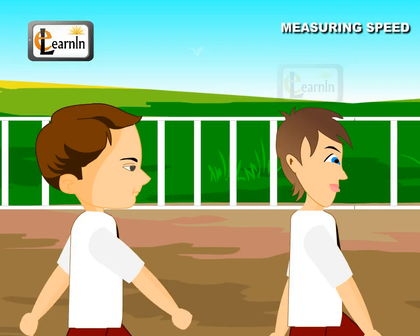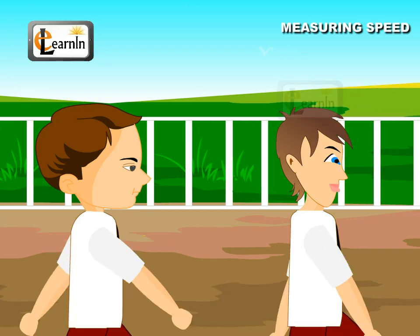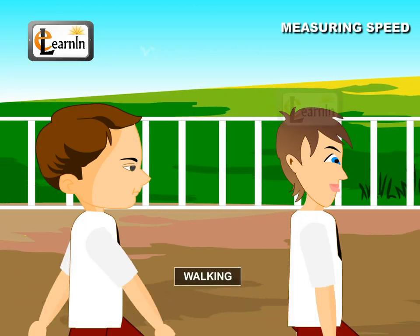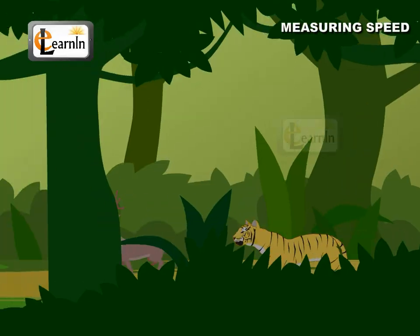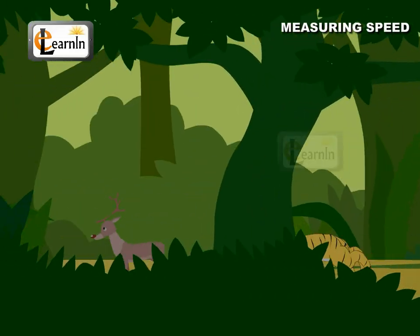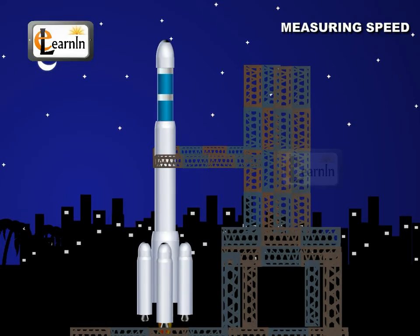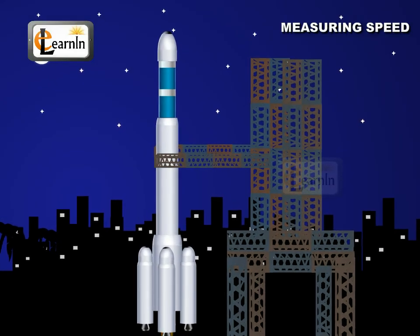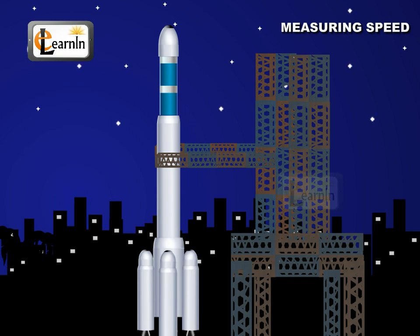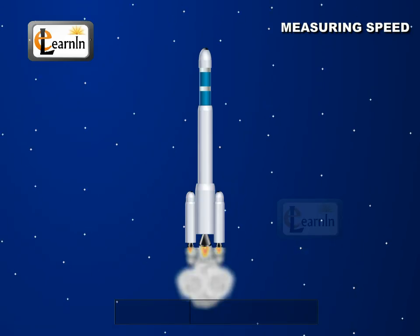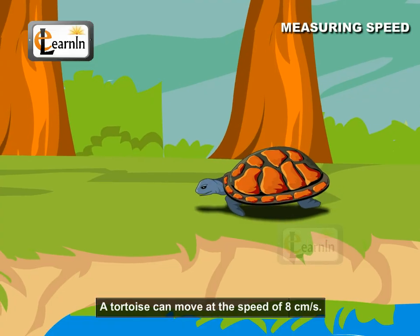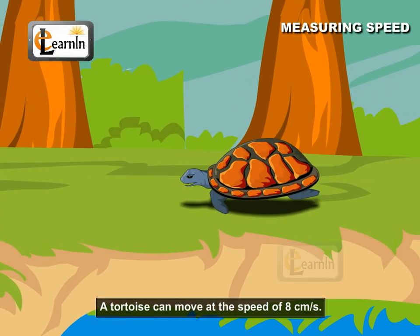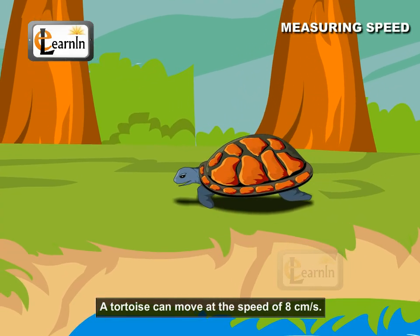We can now compare the speed of various activities like walking or cycling with our friends. The speed of different animals can also be measured. It is interesting to know that the satellites lodged into the earth's orbit by rockets obtain a speed of 8 km per second, while a tortoise can move only at a speed of 8 cm per second.